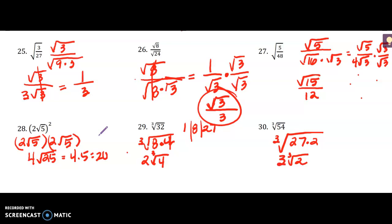Numbers 29 and 30 are kind of a challenge. Instead of square roots we're doing cubed roots. I made a little table of perfect cubes: 1 cubed is 1, 2 cubed is 8 — remember it's 2 times 2 times 2 — and 3 cubed is 27, which is 3 times 3 times 3. Using perfect cube factors, I'm looking for a perfect cube factor of 32, and I saw that 8 is a factor. So 8 times 4: the cubed root of 8 is 2, and then you have the cubed root of 4 left over, so 2 times the cubed root of 4 is your final answer.